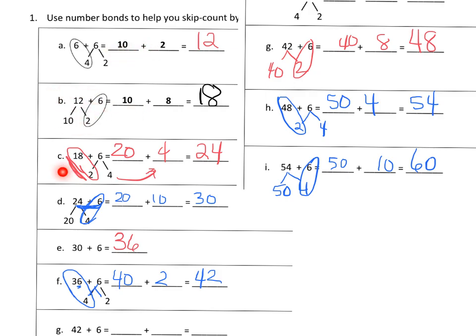The idea here is using number bonds to make the concept of repeatedly adding by six go a little bit quicker, and to make it so students are less likely to make mistakes. If students have a different way they'd like to add by six — a different trick — they're allowed to use it. We're just teaching students a variety of different techniques to make skip counting go efficiently.